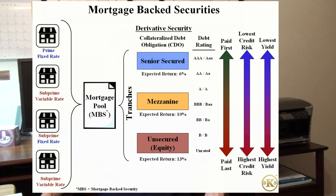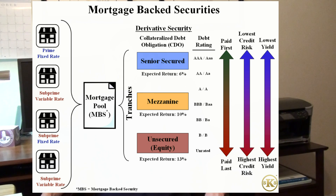These investors distributed collateralized debt obligations of varying quality with independent debt ratings and payment schemes. This system created a self-feeding cycle, which ultimately imploded and exposed the faulty rating and pricing of mortgage-backed securities and their collateralized debt obligation derivatives.